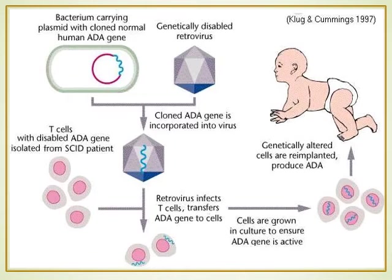The retrovirus-infected T-cells transfer the ADA gene into the cell. We then culture the cells in the lab — that is, multiply them — and check that the ADA gene is active and working properly, secreting the enzyme adenosine deaminase. These T-cells with the normal ADA gene are then re-implanted into the patient so they can be cured from SCID.